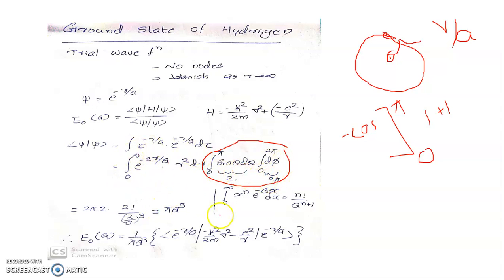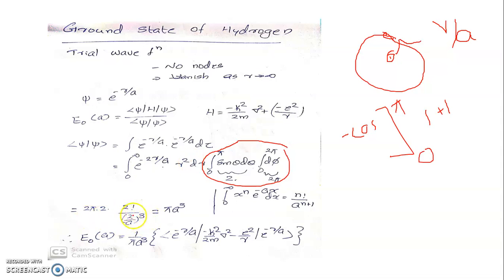To evaluate the radial integral, we use the standard result: integral from 0 to infinity of x^n times e^(−ax) dx equals n! divided by a^(n+1). Here n is 2 (from r²), so n! = 2! = 2, and the coefficient of minus r in the exponent is 2/a, giving (2/a)^3 in the denominator. Combining: 4π times 2 divided by (2/a)³ simplifies — the 8s cancel — leaving π a³.